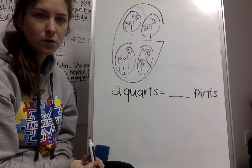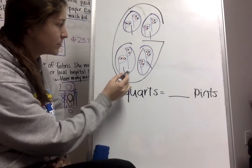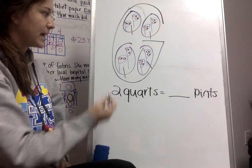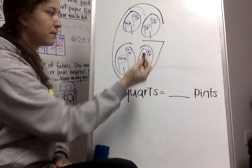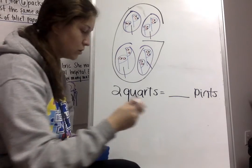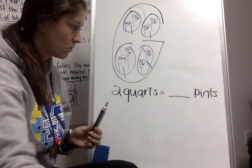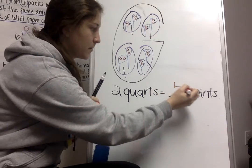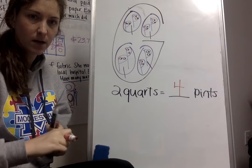Two quarts equals how many pints? So two quarts equals how many pints? Well, I'm going to find two quarts right here, and then I can look in that, and I can see that there are one, two, three, four Ps. So two quarts are going to equal four pints.